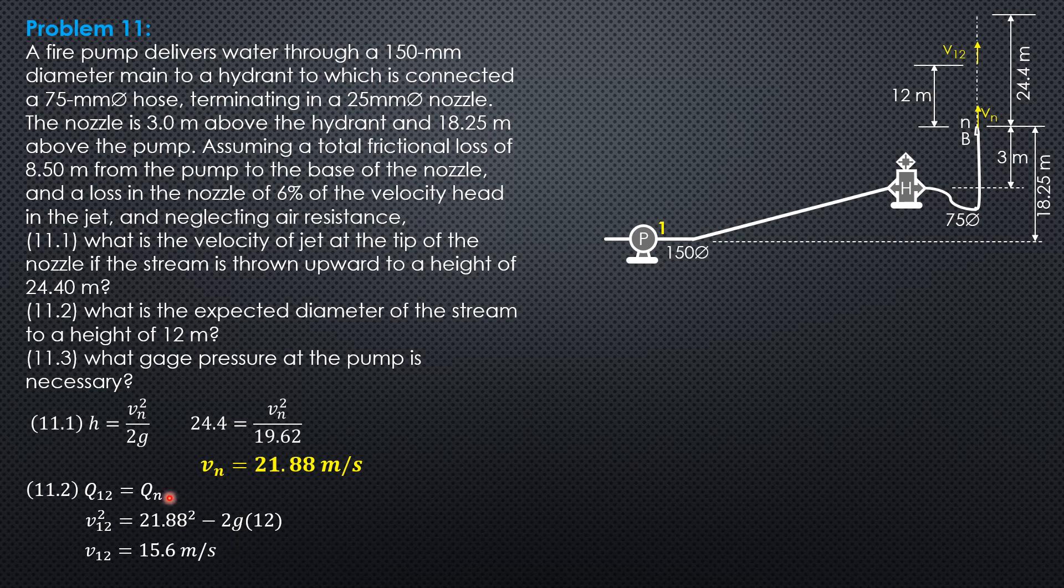Therefore, diameter at 12 squared times 15.6 equals 25 mm squared times 21.88. So the diameter at 12 meters from that nozzle tip is 29.61 mm.